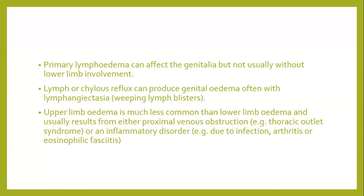Genital edema occurring in isolation is usually a result of local inflammation from infection, anogenital granulomatosis such as cutaneous Crohn's, hidradenitis suppurativa, or sarcoidosis. It can also be part of more widespread edema from heart failure or nephrotic syndrome. Primary lymphedema can affect the genitalia but usually without lower limb involvement. Chyle reflux can produce genital edema with lymphangiectasis, which is a weeping lymph blister. Upper limb edema is much less common and usually results from proximal venous obstruction such as thoracic outlet syndrome or inflammatory disorders.